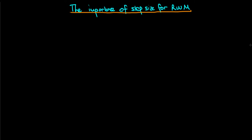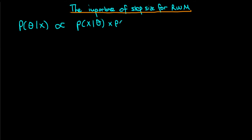In this video I want to explain how important it is to choose an appropriate step size for efficient running of the random walk metropolis algorithm. In Bayesian statistics, this algorithm is typically used to sample from the posterior using solely the numerator of Bayes' rule — that's the likelihood times the prior.